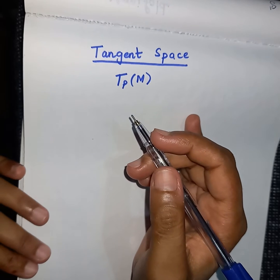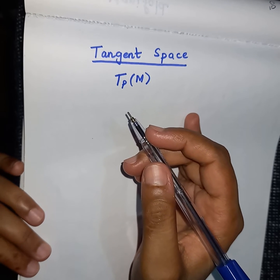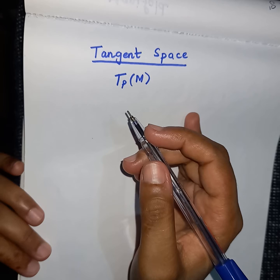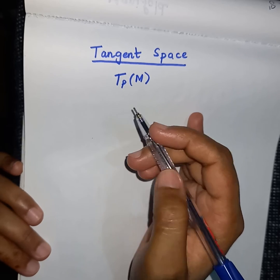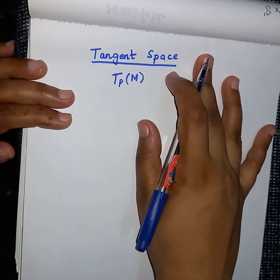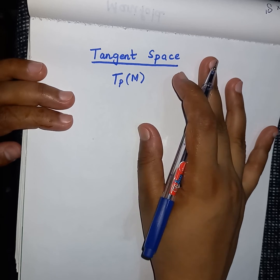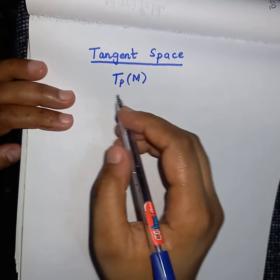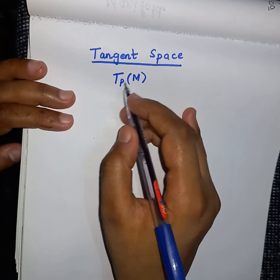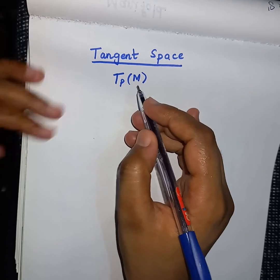Hello everyone. In the previous lecture I discussed the definition and examples of a manifold, and in today's lecture we will discuss the definition and the concept of a tangent space. We denote tangent space with T_p(M), where M denotes the manifold.